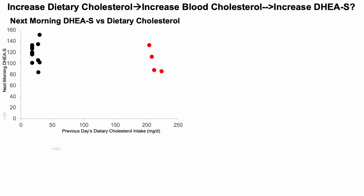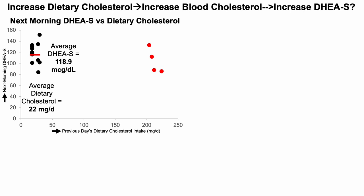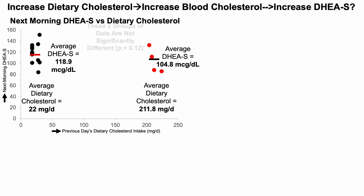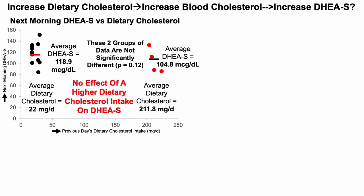Four at-home DHEA sulfate blood tests were taken the day after egg intake. For the first 12 tests with an average dietary cholesterol of 22 milligrams per day, my average DHEA sulfate was about 119 micrograms per deciliter. After including eggs, my average DHEA sulfate over those four tests was 105 micrograms per deciliter. Using a two-sample t-test, these two groups are not significantly different. In fact, one could argue there's a trend towards lower DHEA sulfate with more dietary cholesterol, but those two groups aren't significantly different. So there was no effect of higher dietary cholesterol intake on my DHEA sulfate.